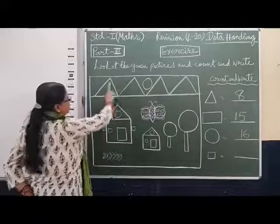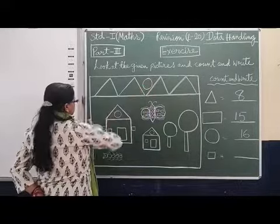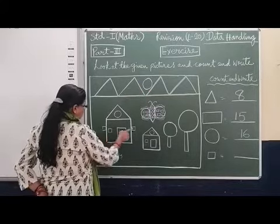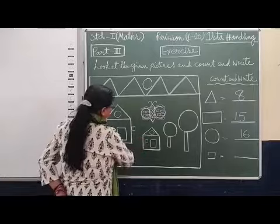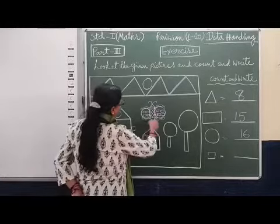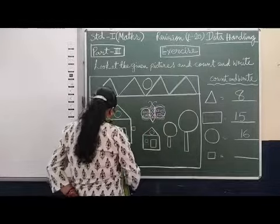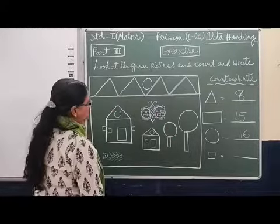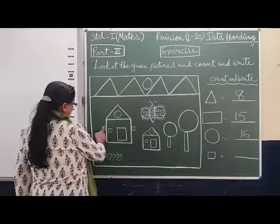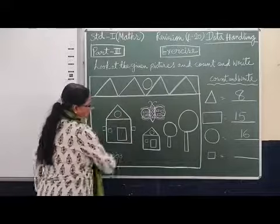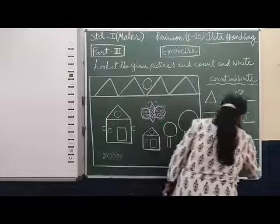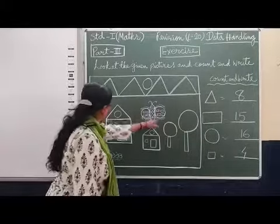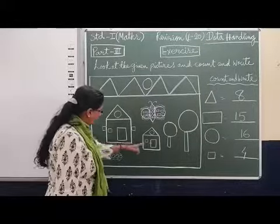Now let us count squares. In the mountains there are no squares. The windows of the house are squares: one, two, three, four. The other shapes we see are all rectangles, not squares. So there are only 4 squares. All the remaining shapes like doors and walls are rectangles, which we have already counted.